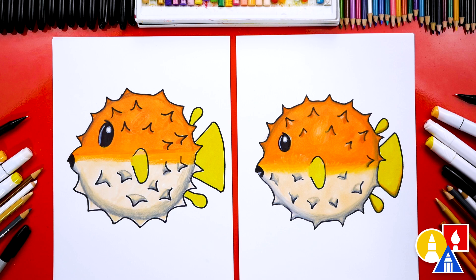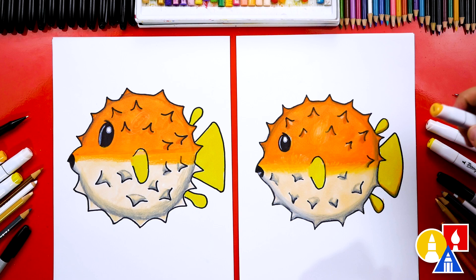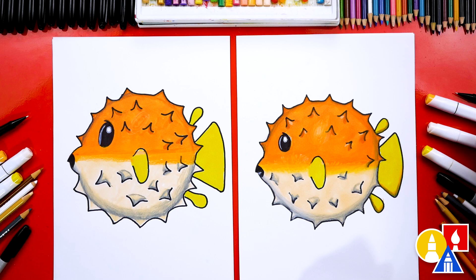You can also add a background. Oh yeah, background would be really cool. If you do have the same Ohuhu alcohol-based markers, we used Y505, the orange, for the top of our fish. Then for the fins, we used Y107. Yeah. And then the bottom of the fish, we used Y900. We hope you had a lot of fun drawing your puffer fish with us. And we'll see you later, art friends. Goodbye! Bye!